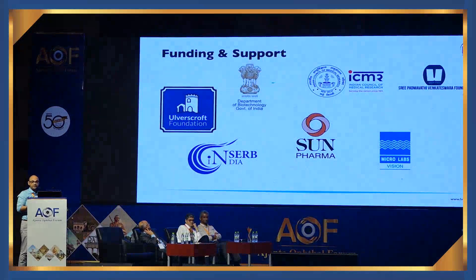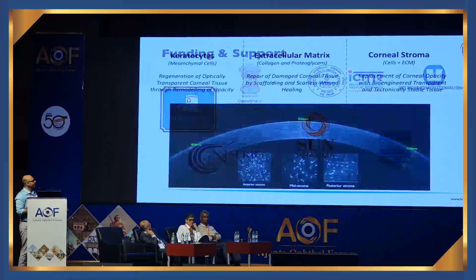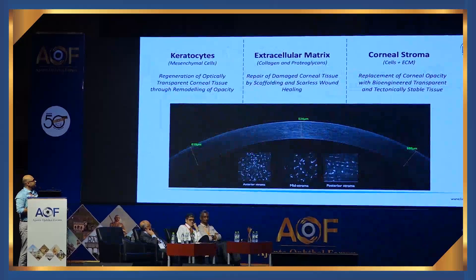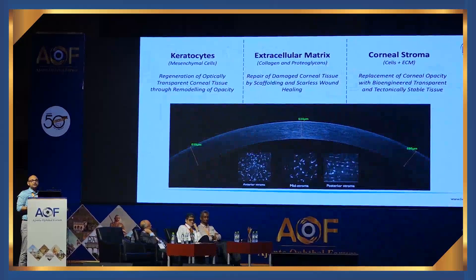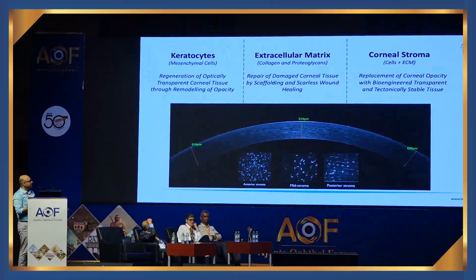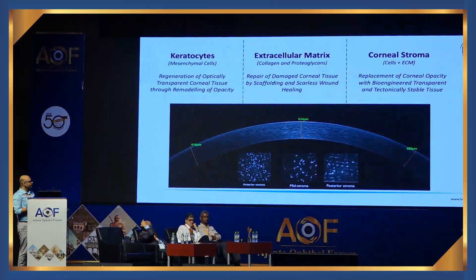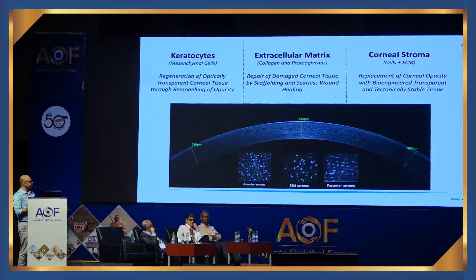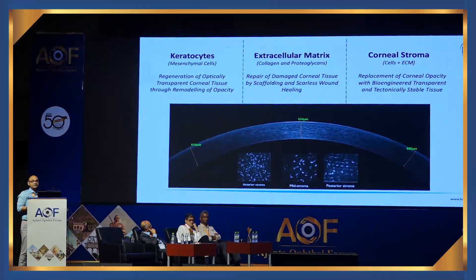Coming back to the stroma — this is what I think of when I consider the stroma. You can see a nice OCT section of a normal cornea and, below it, confocal images from the anterior stroma, the mid stroma, and the posterior stroma. The cornea is a very simple tissue because it is very uncluttered and uncomplicated.